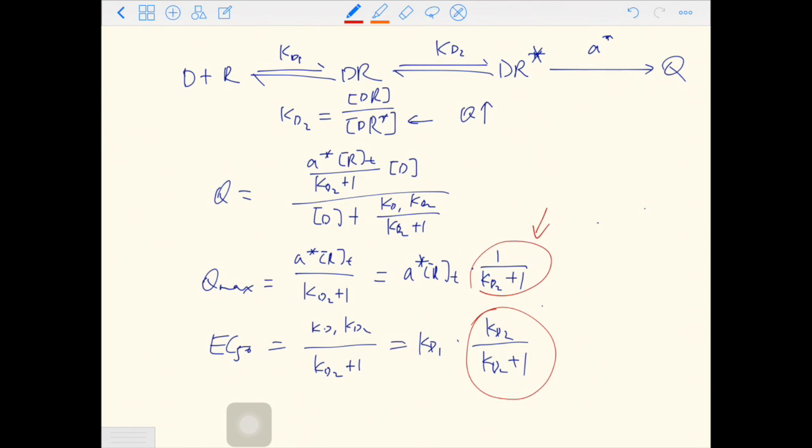For this term, if Kd2 is 0, this term is 1. So when Kd2 is 0, the drug is a full agonist. All the DR is in the active form, and the Qmax equals alpha times Rt. That is what we have in Clark's model.